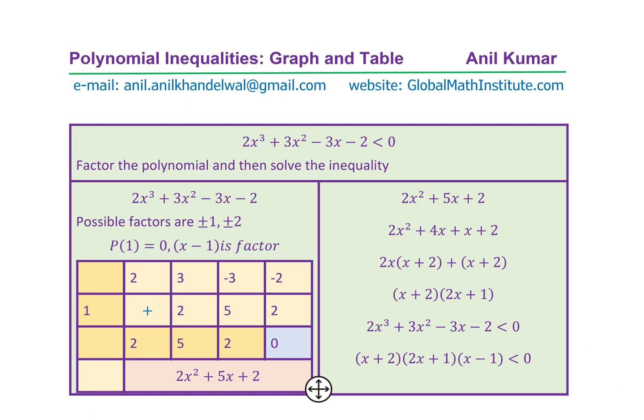So we got these zeros at x = -2, -1/2, and 1. Now, how do we solve further? Let's see it here once again. So what we started with is the inequality, which is 2x³ + 3x² - 3x - 2 < 0. So we need to factor this polynomial. As you have seen, we found that for P(1), x = 1, we got a 0.